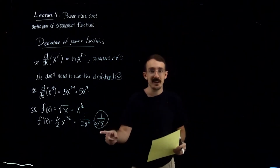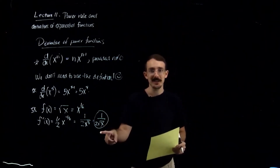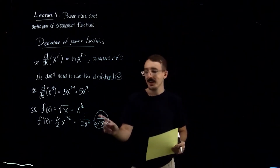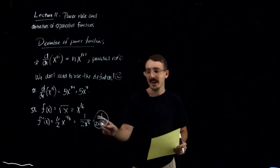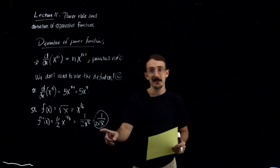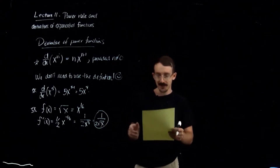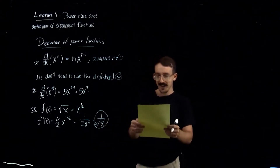Where would the derivative not exist here? The derivative would not exist at x = 0 — just a reminder from lecture 10.